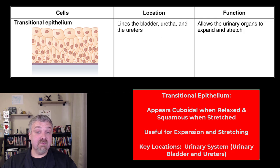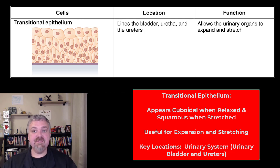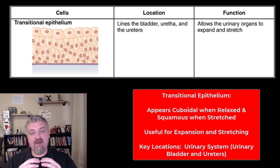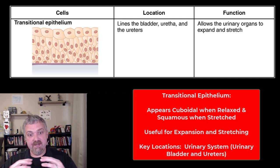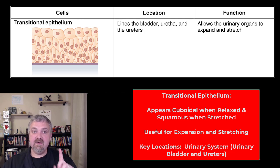Then we have transitional epithelium — called that because it transitions or changes. You only see this in the urinary system; the bladder and the ureters are the two key examples. When the bladder is empty, the cells are scrunched up together and they look cuboidal, as you can see in the picture. But when the bladder fills, they stretch and will look squamous. So it's called transitional epithelium because the cells change depending on whether the bladder is full or empty. The urinary bladder is by far the key example.